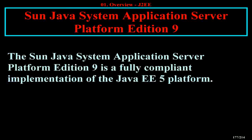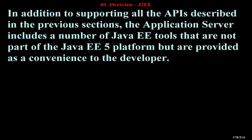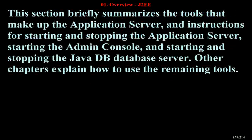The Sun Java System Application Server Platform Edition 9 is a fully compliant implementation of the Java EE 5 platform. In addition to supporting all the APIs described in the previous sections, the application server includes a number of Java EE tools that are not part of the Java EE 5 platform but are provided as a convenience to the developer. This section briefly summarizes the tools that make up the application server, and provides instructions for starting and stopping the application server, starting the admin console, and starting and stopping the Java DB database server.